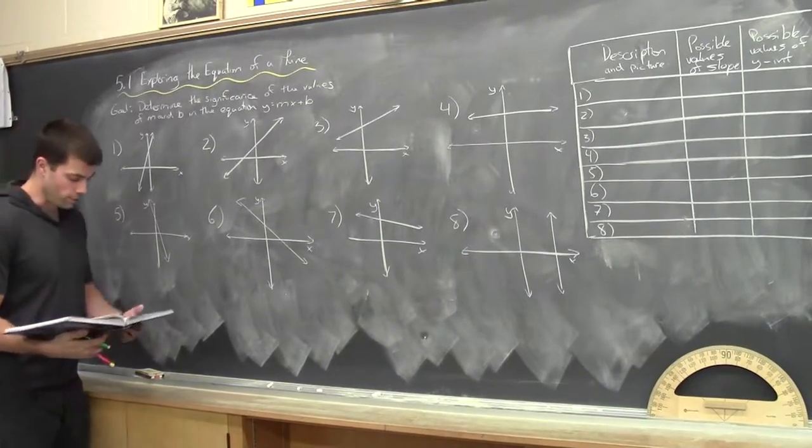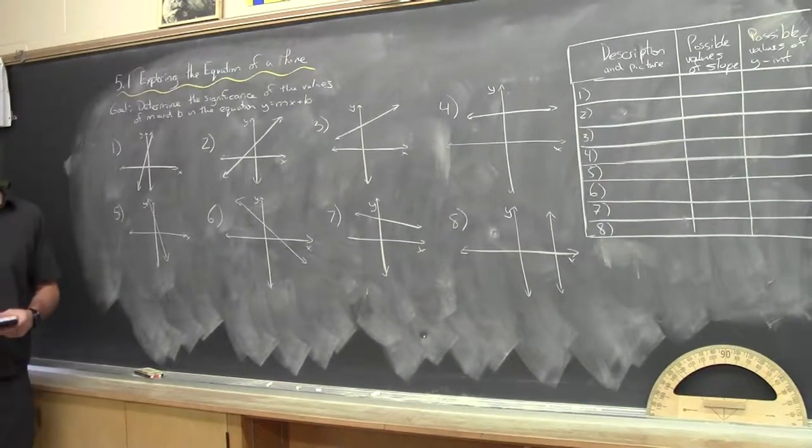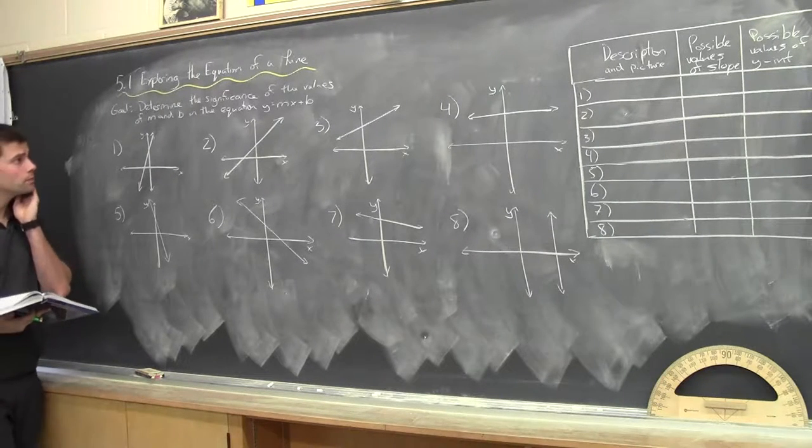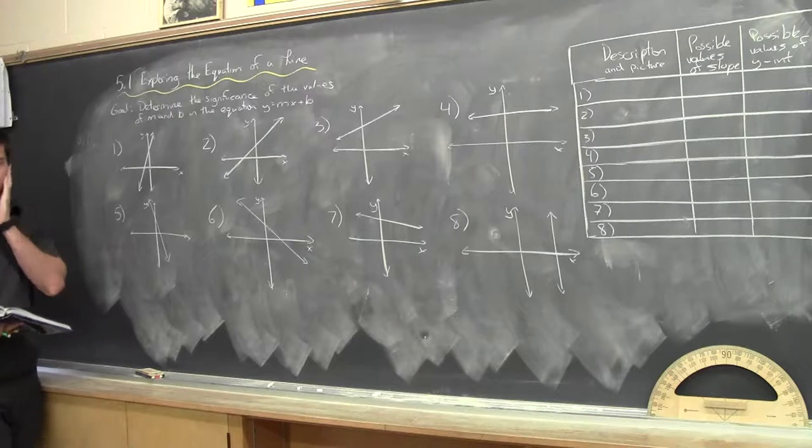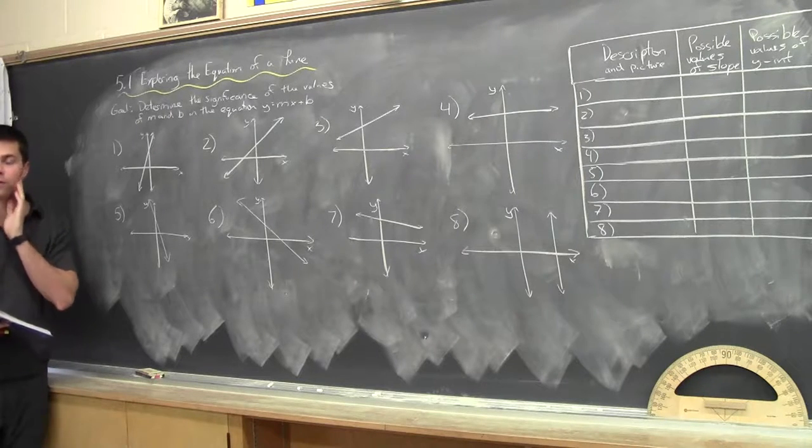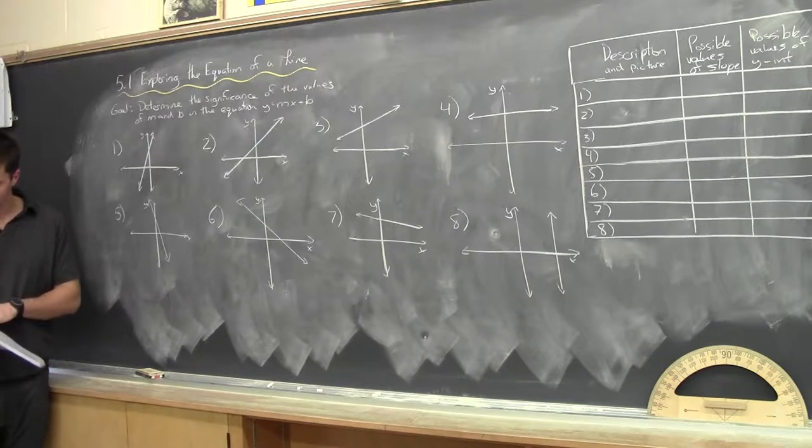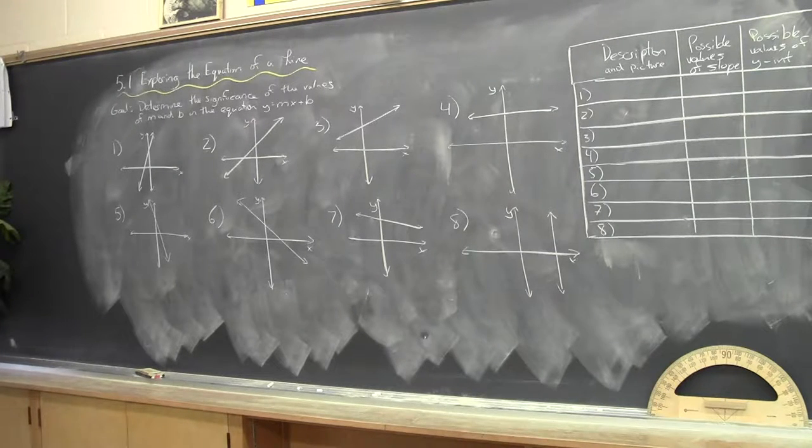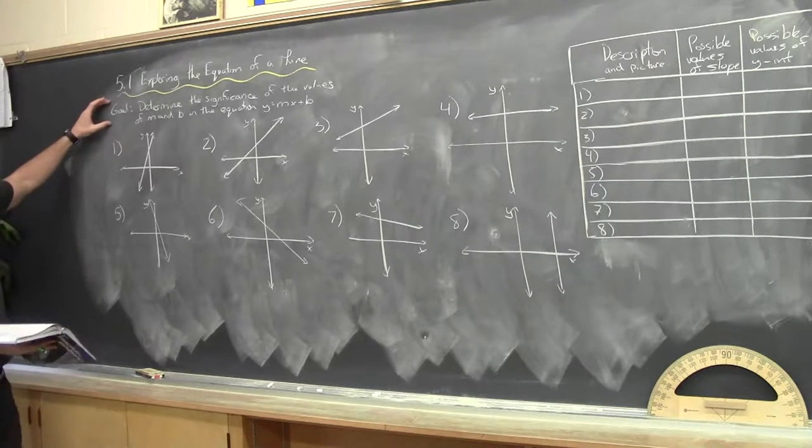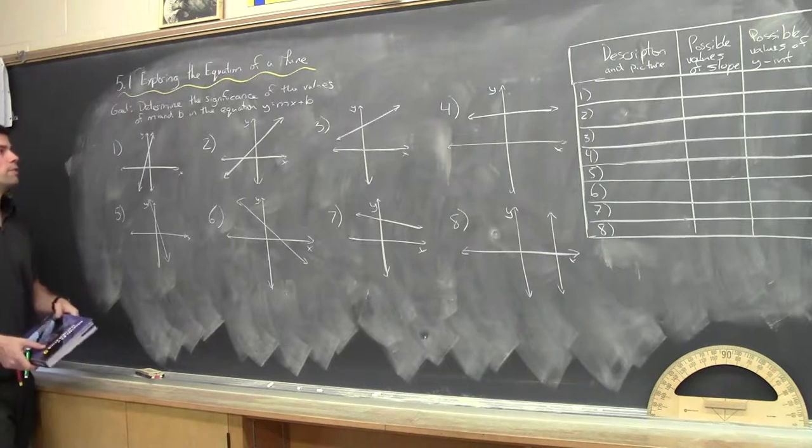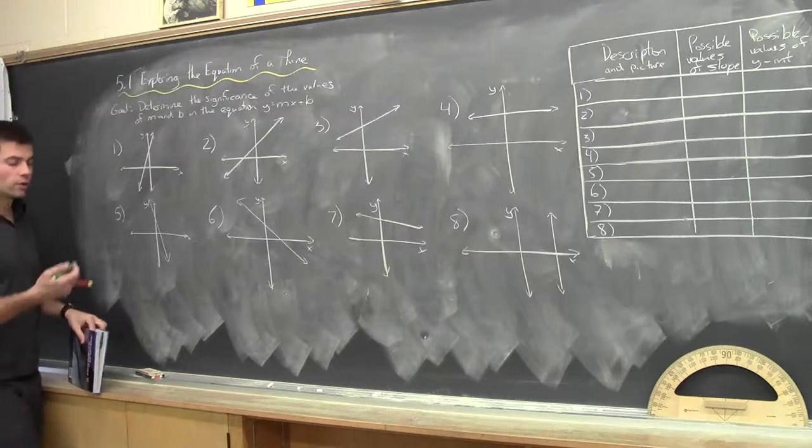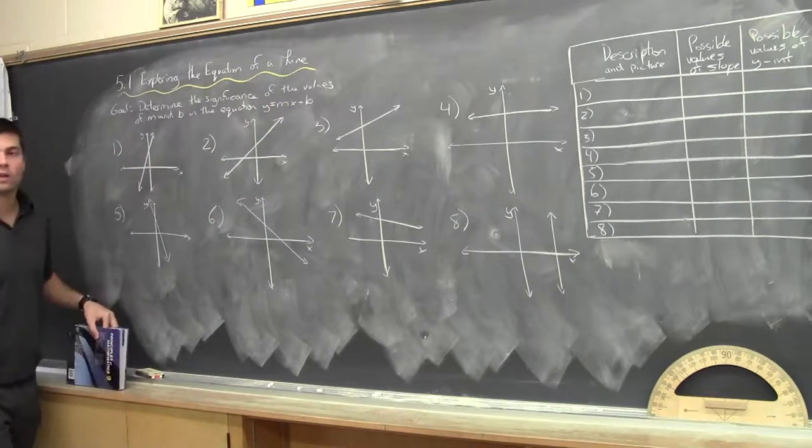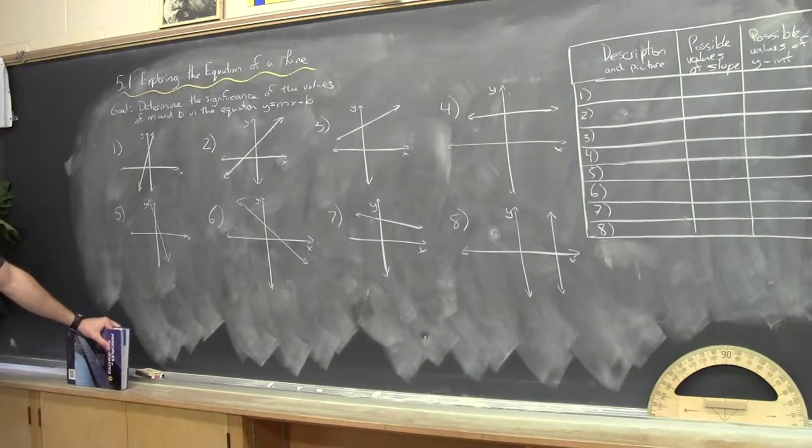Okay, this is section 5.1, page 260 of your textbooks. We're looking at exploring the equation of a line. We've done quite a bit of this already, so this should be very familiar to you guys. It's not necessarily new, but we are getting into a little bit more details. The goal is to determine the significance of the values of m and b in the equation y equals mx plus b.